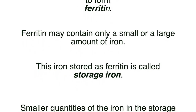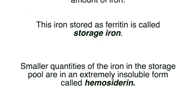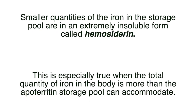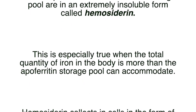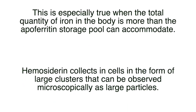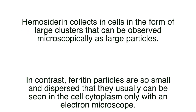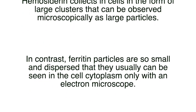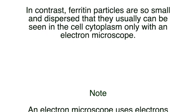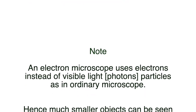Ferritin may contain only a small or a large amount of iron; this iron stored as ferritin is called storage iron. Smaller quantities of iron in the storage pool are in an extremely insoluble form called hemosiderin, especially when the total quantity of iron exceeds the ferritin storage pool capacity. Hemosiderin collects in cells as large particles observable microscopically, whereas ferritin particles are so small and dispersed they can usually only be seen with an electron microscope.